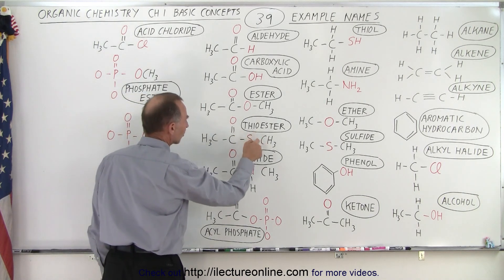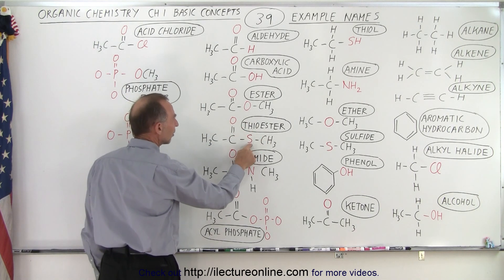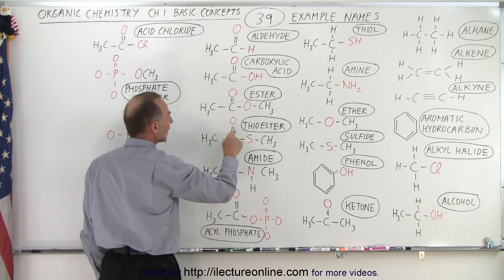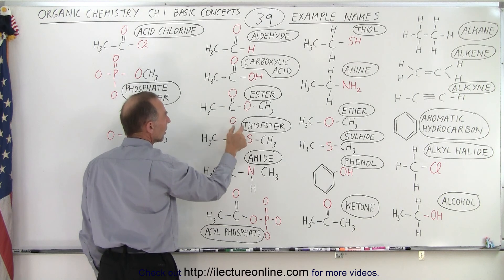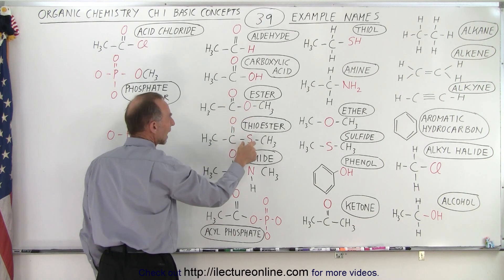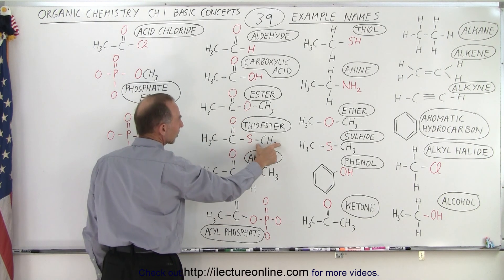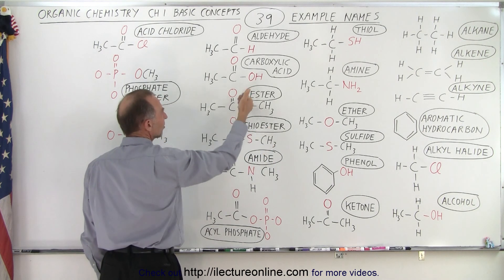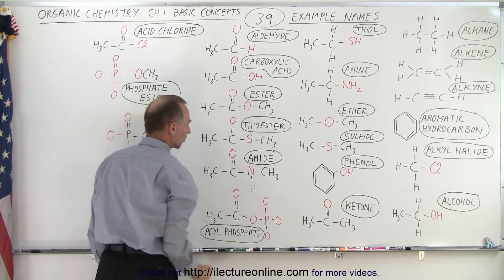Here we have a thioester. Thio is always associated with sulfur. So here we have the same grouping: a double bonded oxygen, but instead of having an oxygen we have a sulfur and then the carbon chain. So that means this is what we call a thioester. It looks the same as an ester but with a sulfur instead of an oxygen.